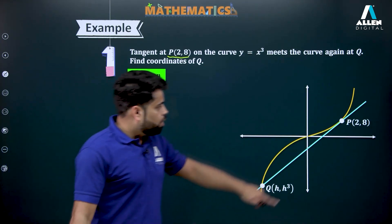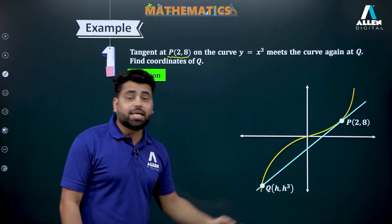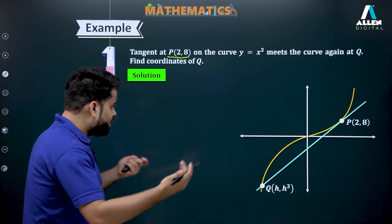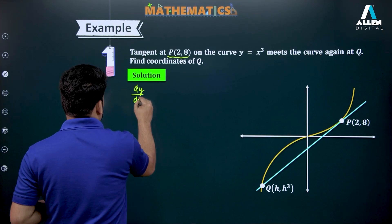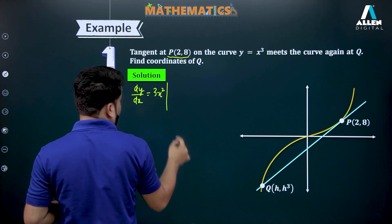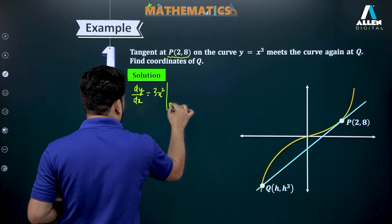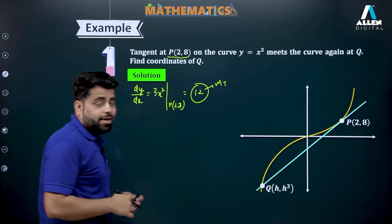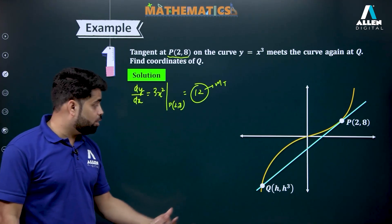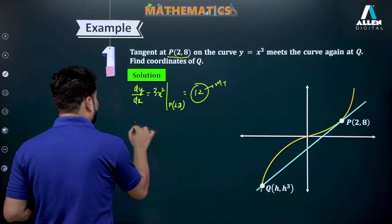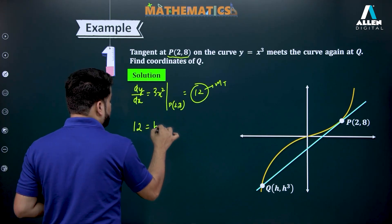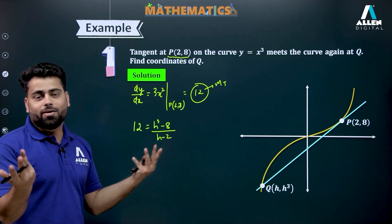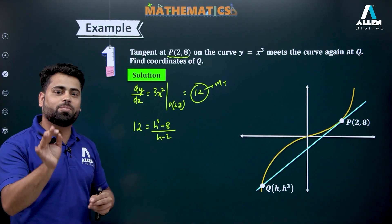Let me proceed: one point is given as (2, 8) and I assume the other point to be (h, h³), because this point lies on the curve y = x³. I find dy/dx = 3x², and at point P (2, 8) the slope of the tangent comes out to be 12. I can write the same slope using (y₂ - y₁)/(x₂ - x₁), which gives (h³ - 8)/(h - 2). Now I just need to solve for h.